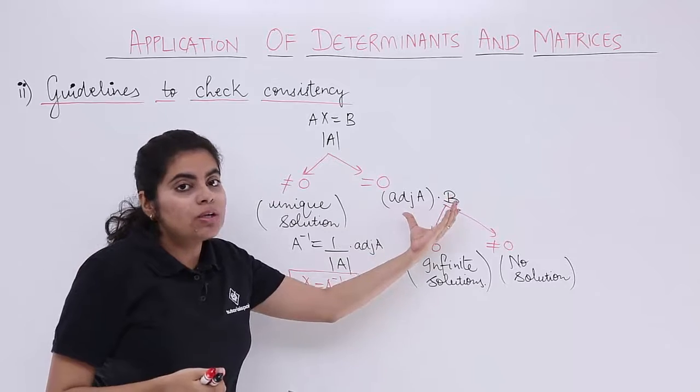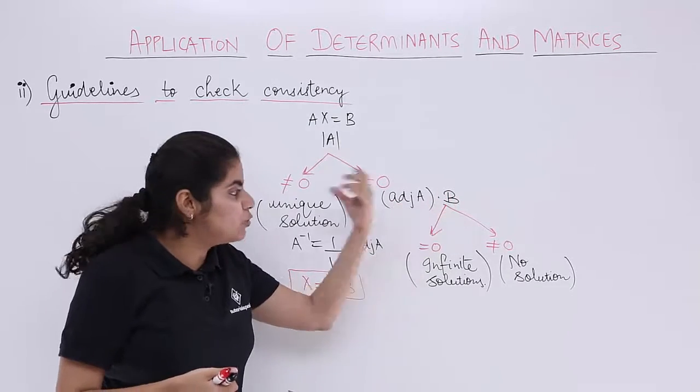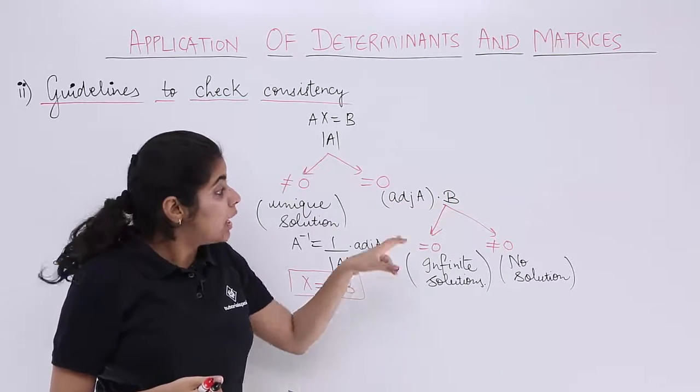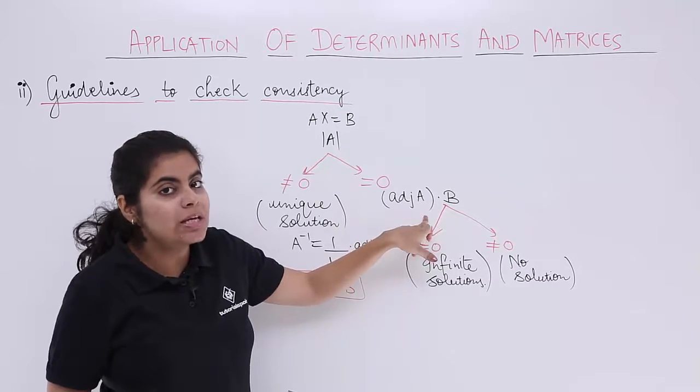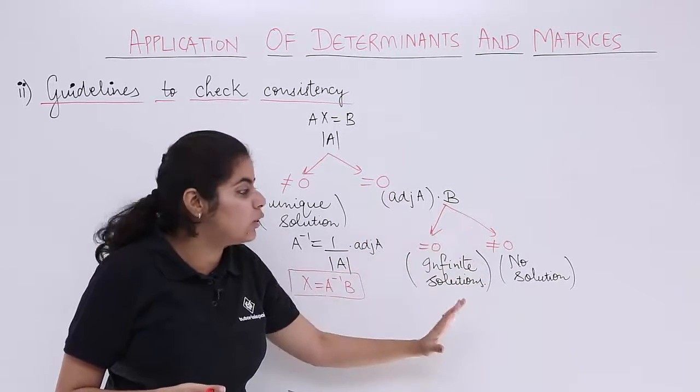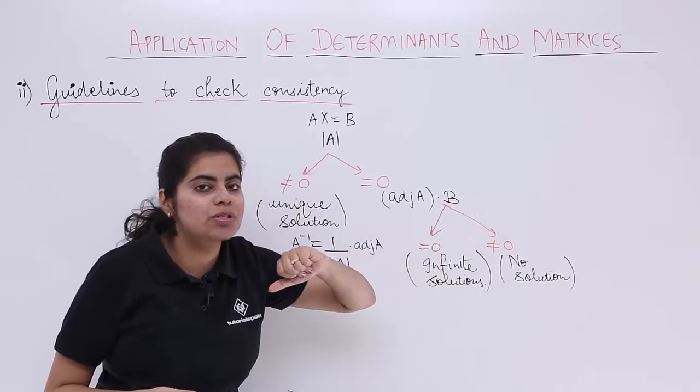If it is 0, you don't need to stop there, and then you need to find adjoint A into B. If adjoint A into B value is 0 and not 0, things will change. If 0, infinite solution. If not 0, no solution.